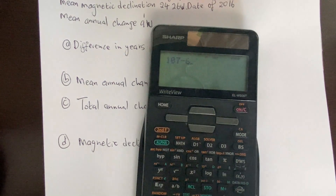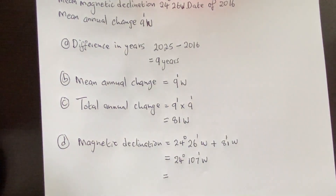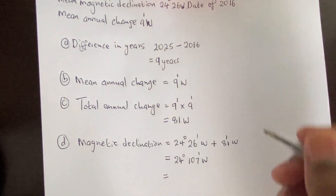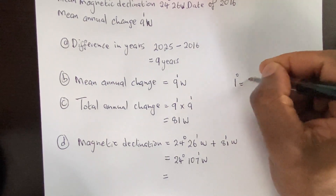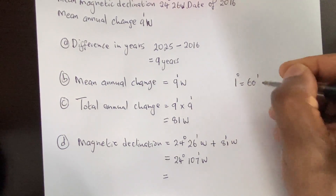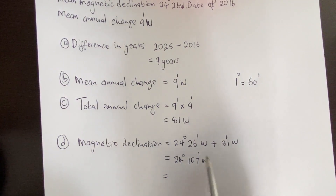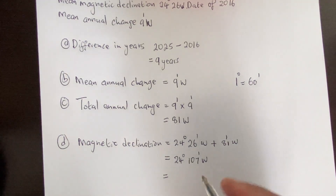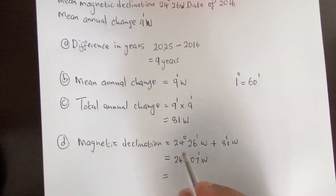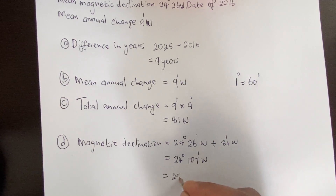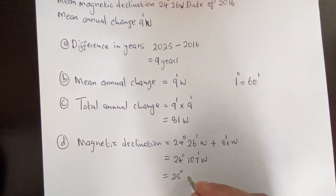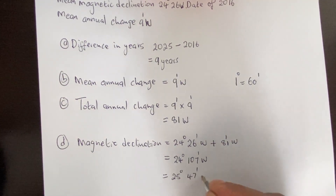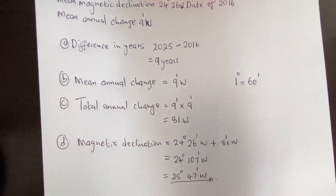So 107 minus 60 equals 47. That 60 minutes we subtracted becomes one degree added to our magnetic declination. This gives us 25 degrees 47 minutes west, which is our total magnetic declination.